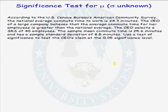Let's do a test of significance for the population mean mu when the population standard deviation sigma is not known. According to the United States Census Bureau's American Community Survey, the national average commute time to work is 24.3 minutes. The CEO of a large company believes that the average commute time for her employees is greater than the national average.